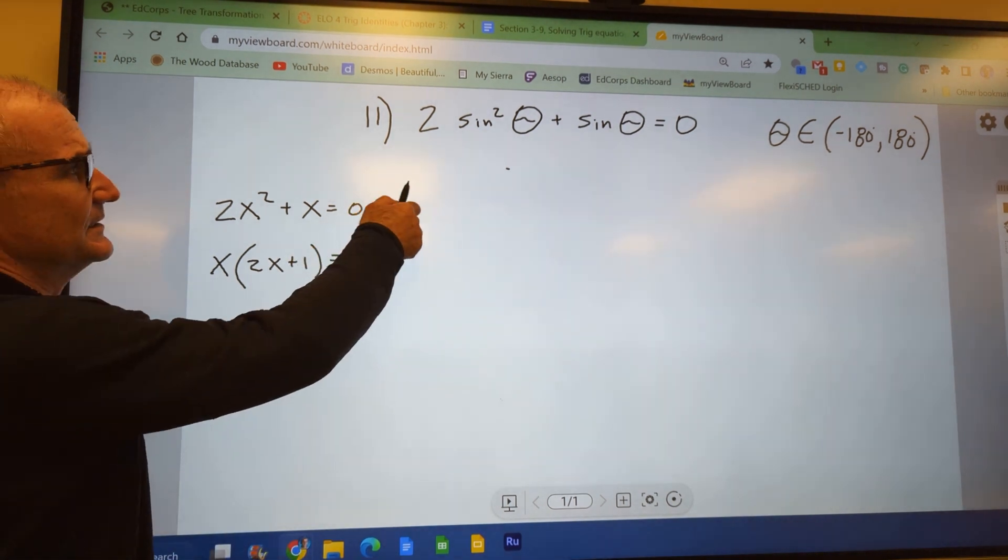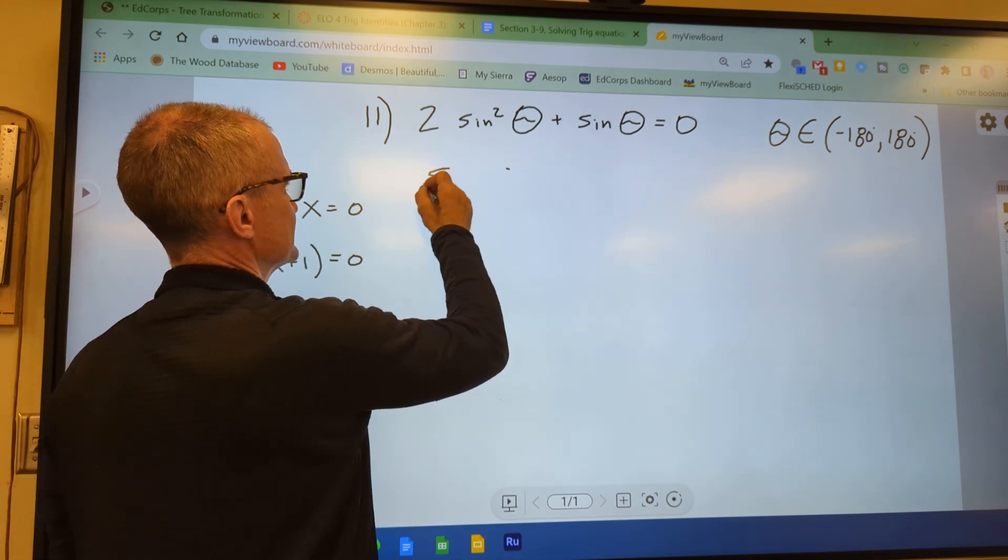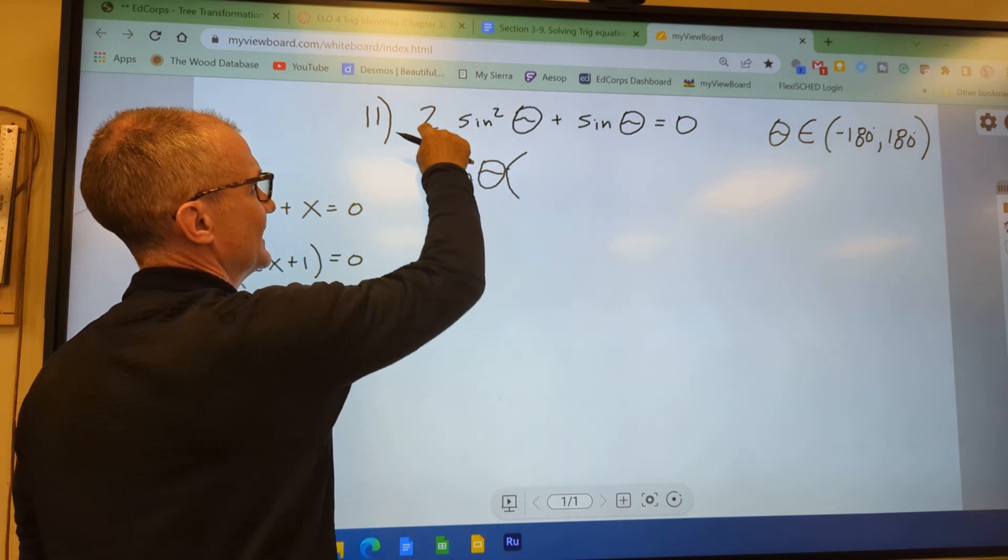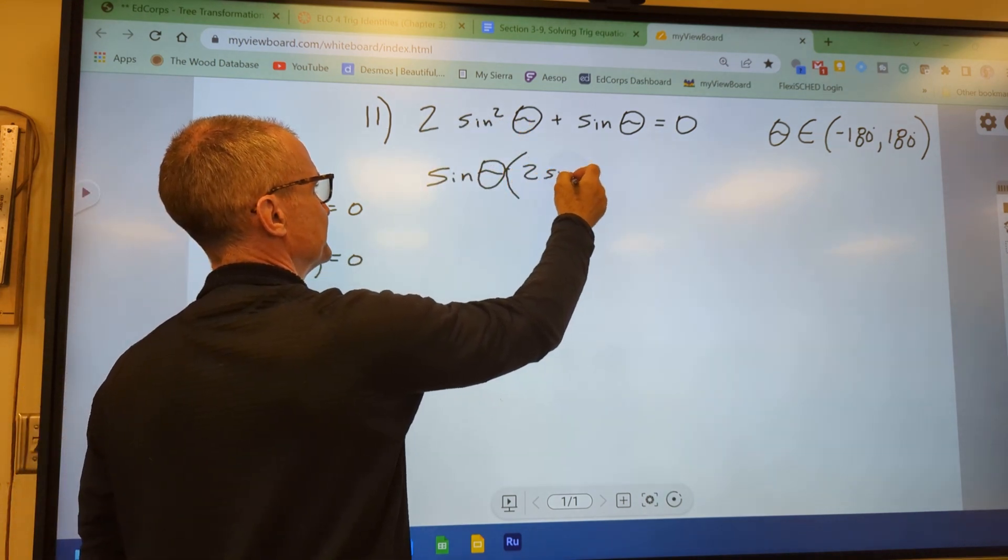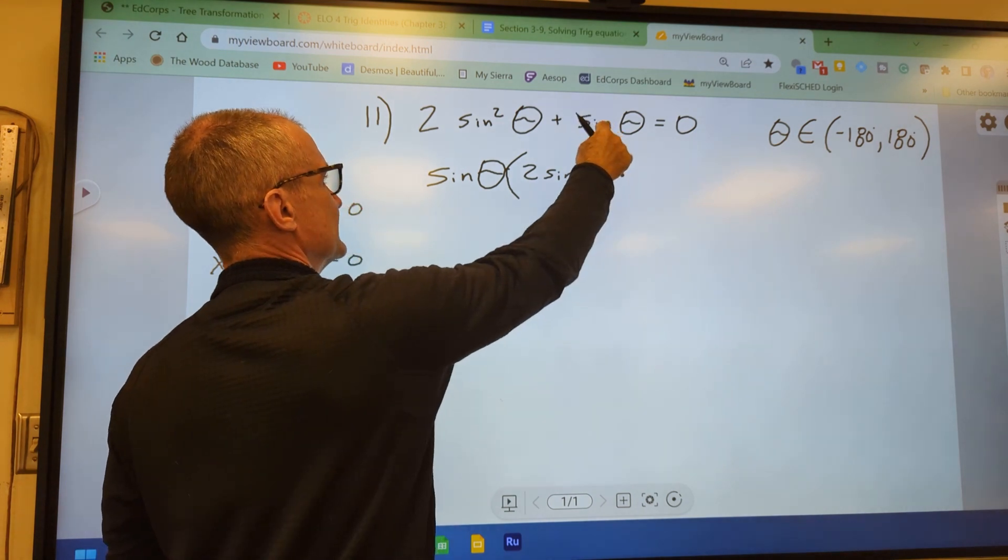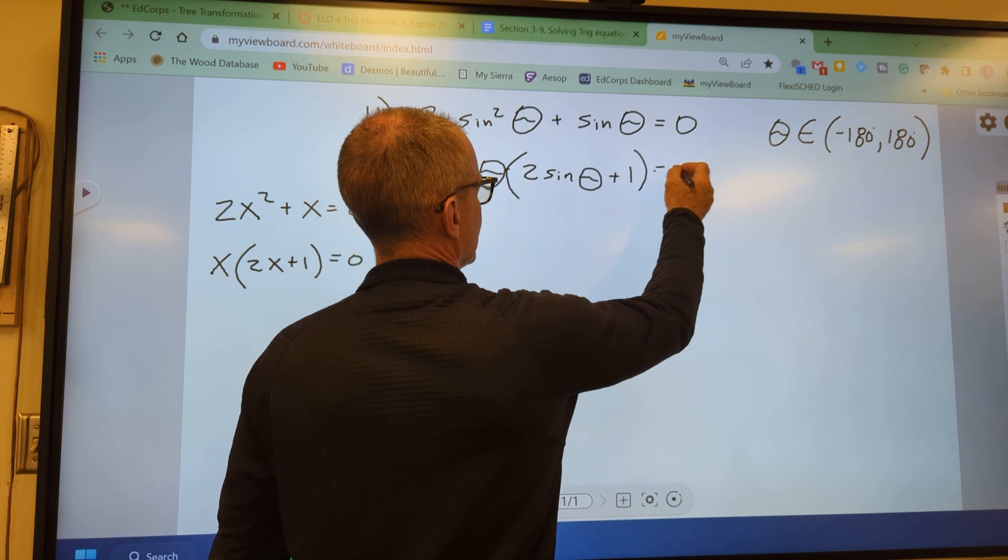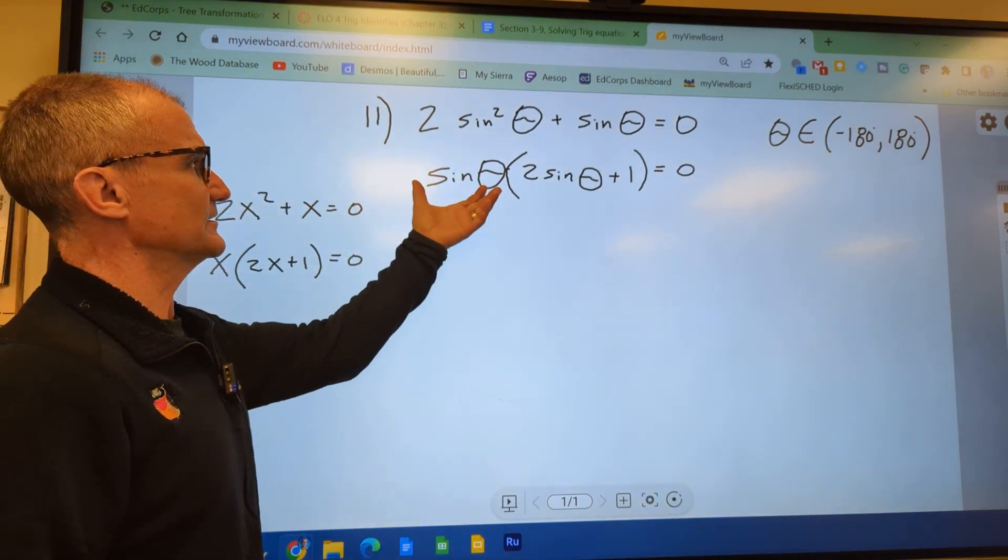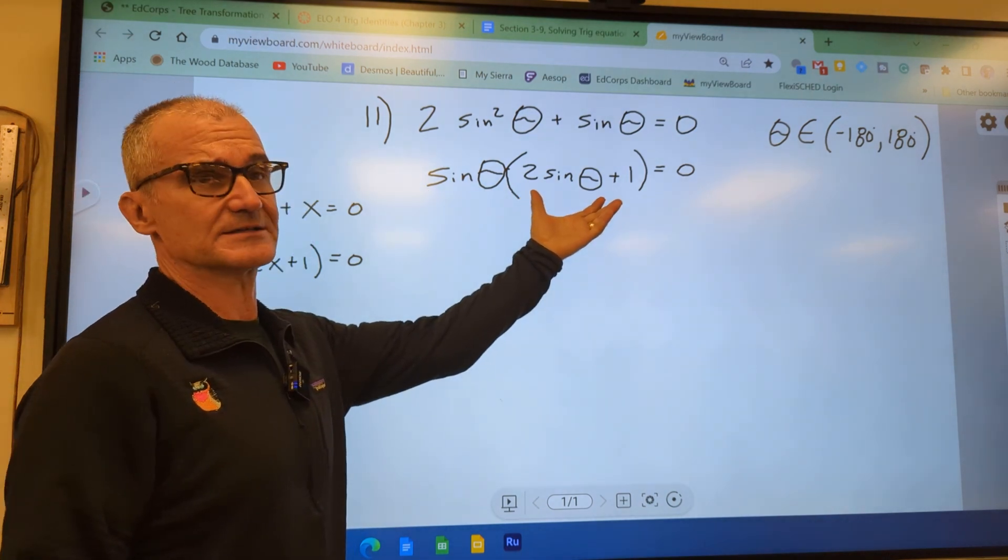So I'm going to do the same thing here. There's a common term here. It's sine of theta. I'm going to pull that sine of theta out front. So I have sine of theta. Once I pull that sine of theta out of this quantity, I'm left with 2 sine of theta. And then I pull sine of theta out of this quantity, I'm left with a 1. And the whole reason I did that is so I could use the zero product property. So either this thing right here has to equal 0, or this thing right here has to equal 0.